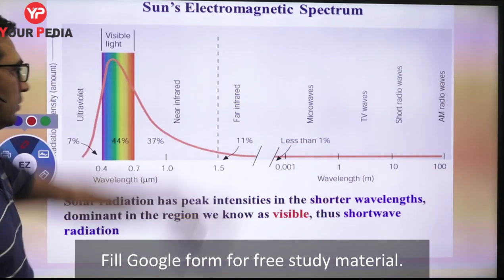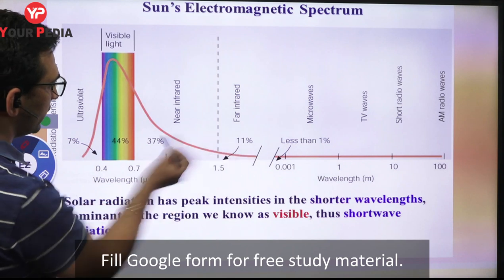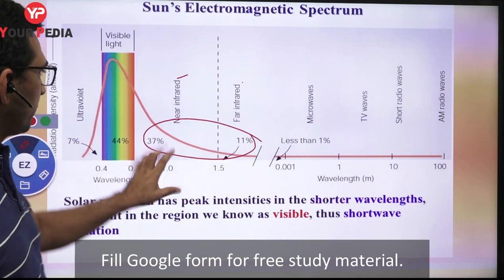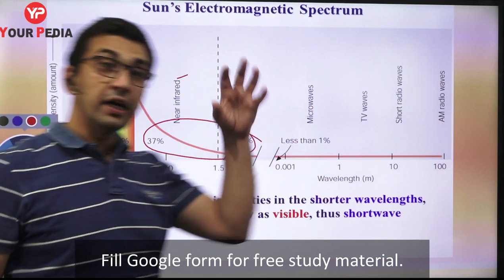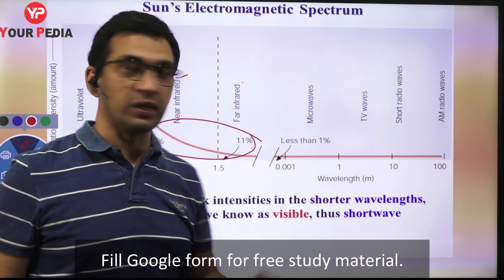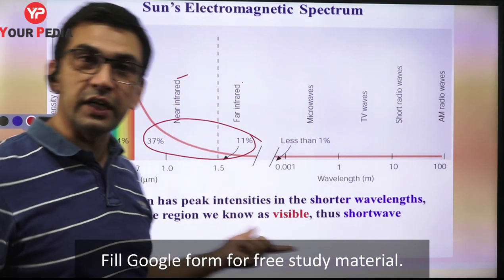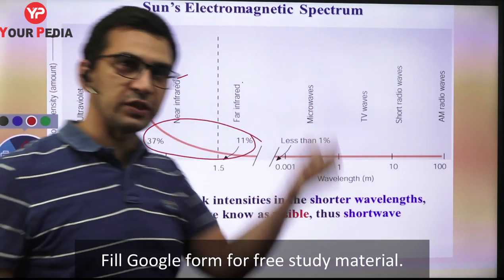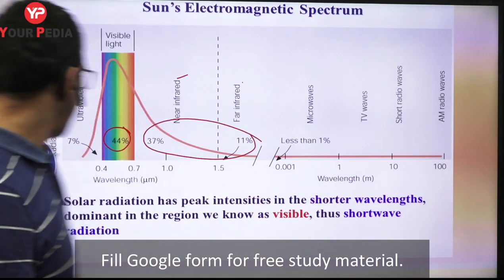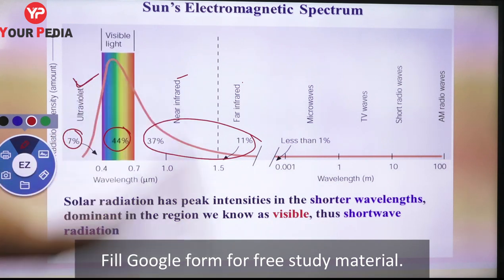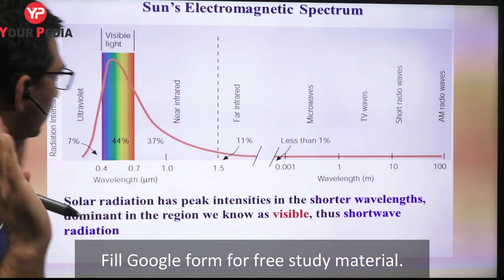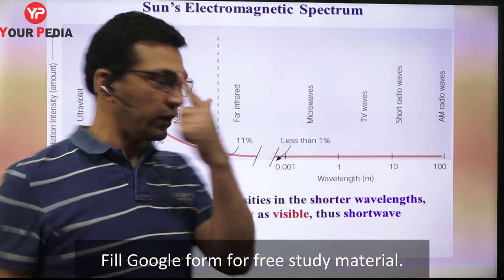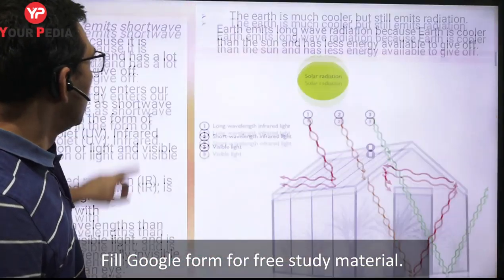Roughly about 48 percent of the energy received from the sun is in the infrared region, approximately 44 percent is in the visible range, and a very small portion - roughly about 7 percent - is in the ultraviolet region. This gives an idea of what wavelengths most of the energy we receive from the sun falls under.